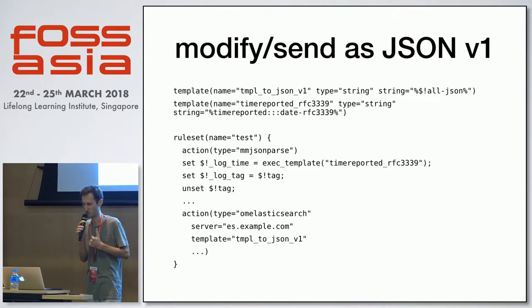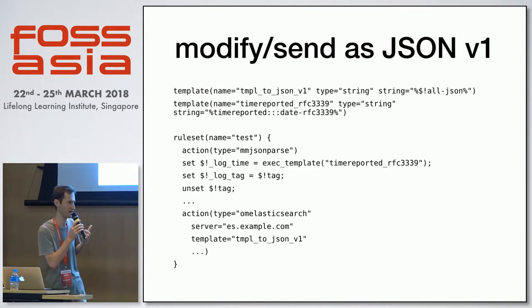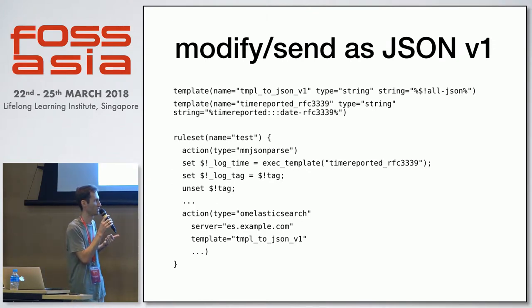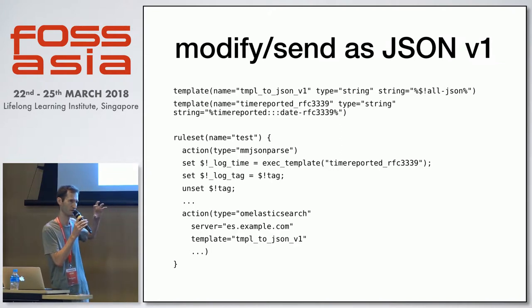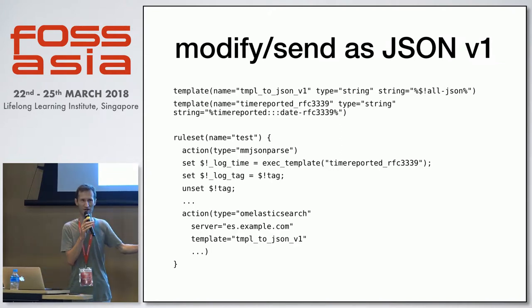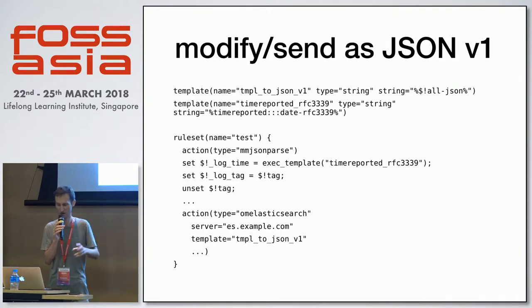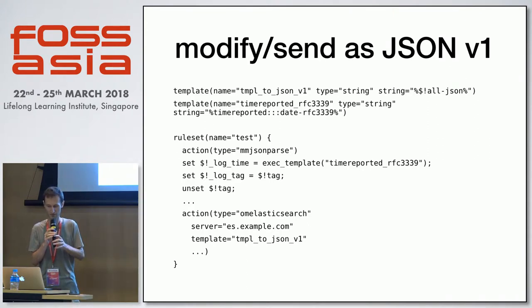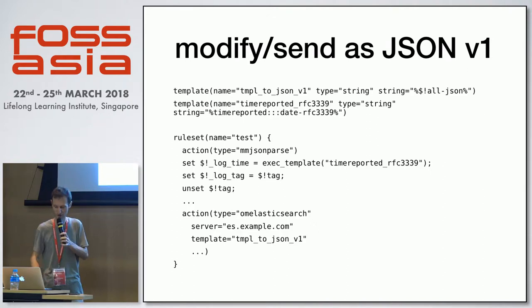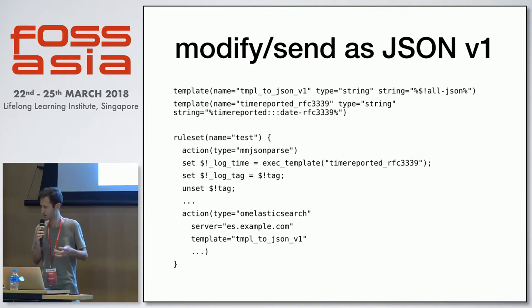There are two ways to send data further as JSON. The first is by directly modifying JSON objects and relying on rsyslog to send them — doing some magic with fields, and then sending that full JSON object.